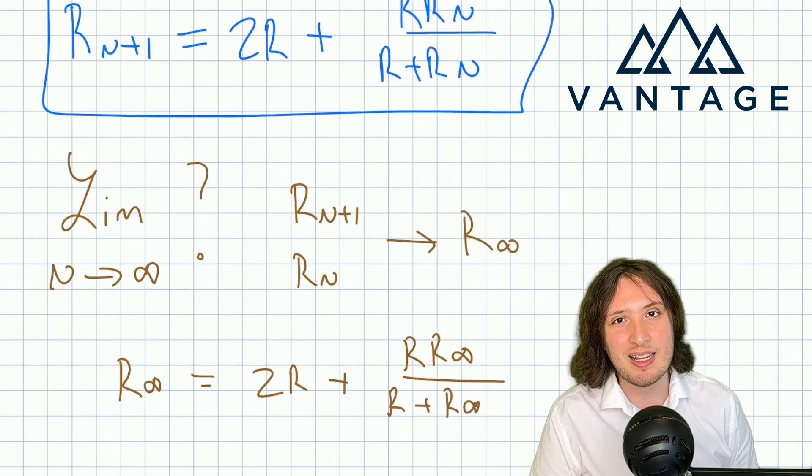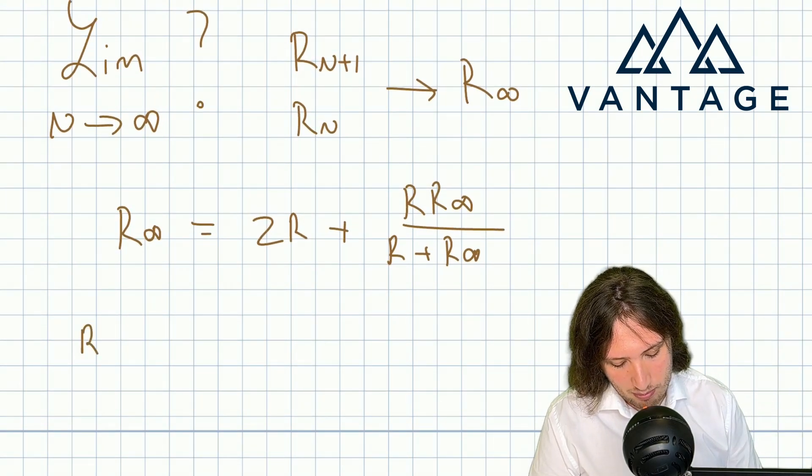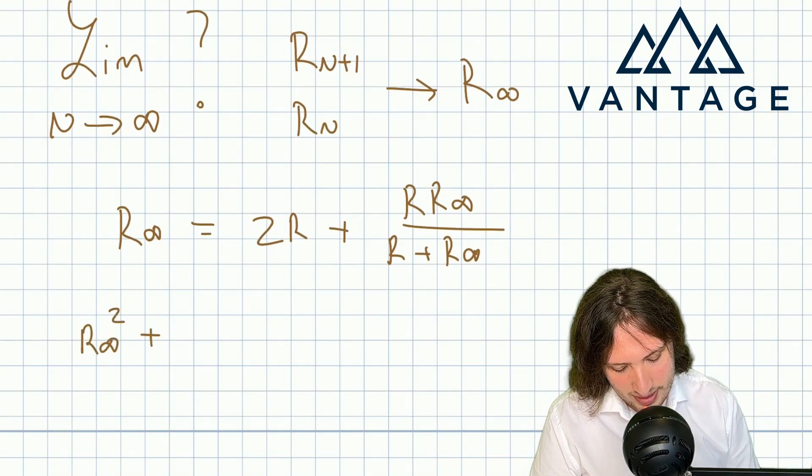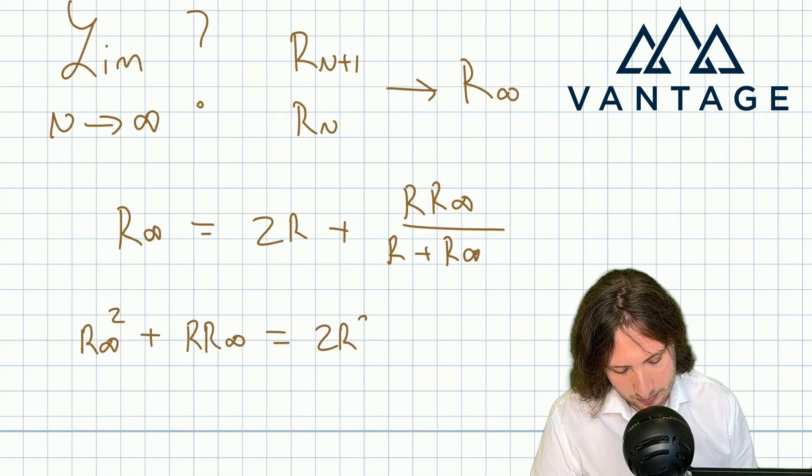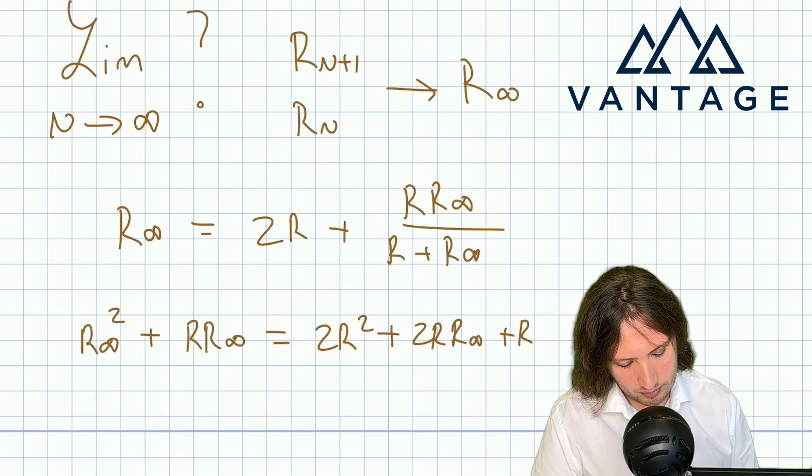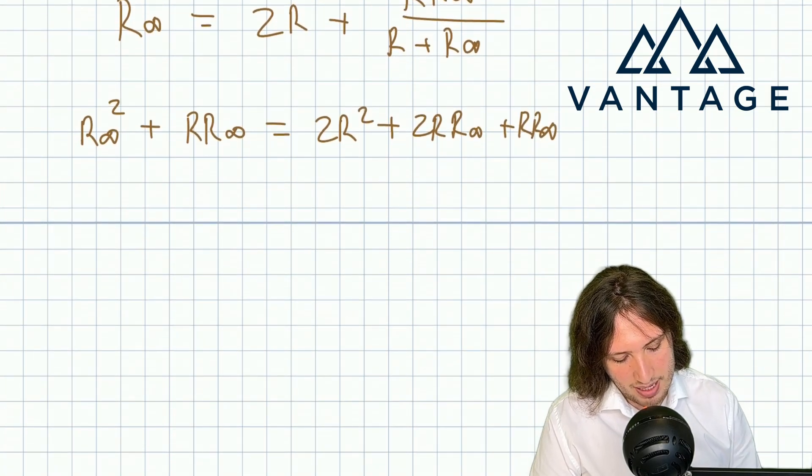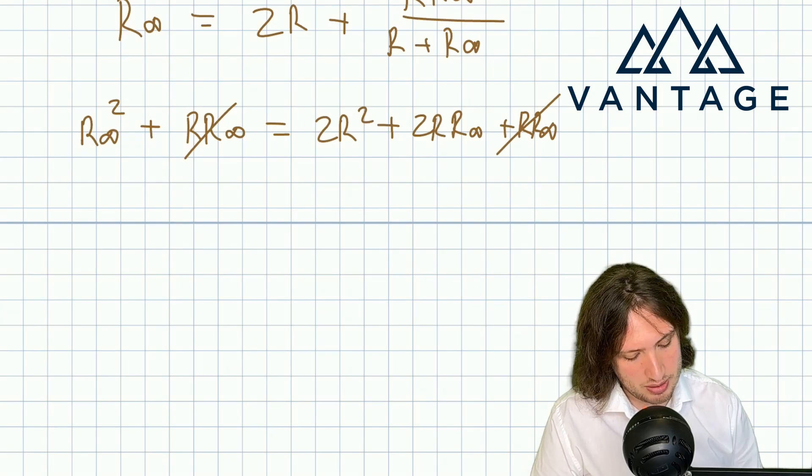Multiplying through to clear denominators I get this. And then I can collect like terms.